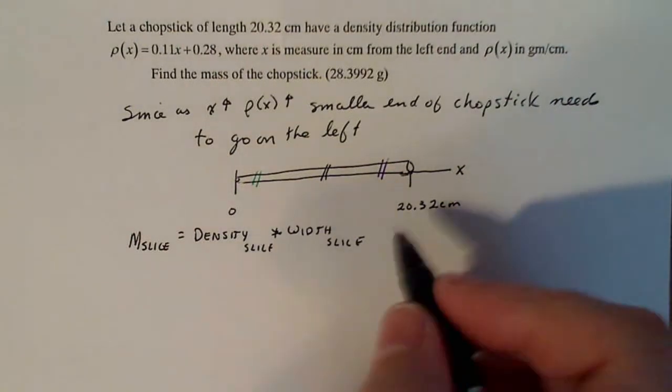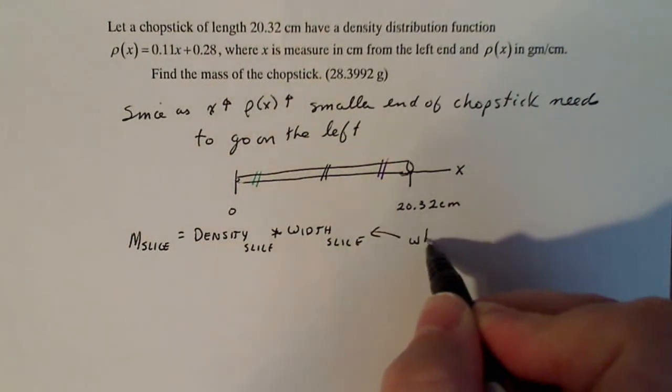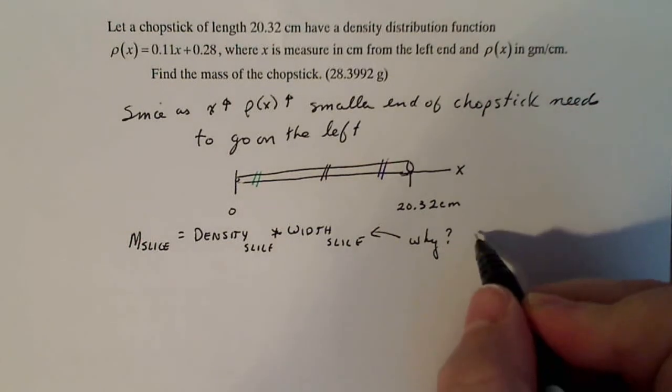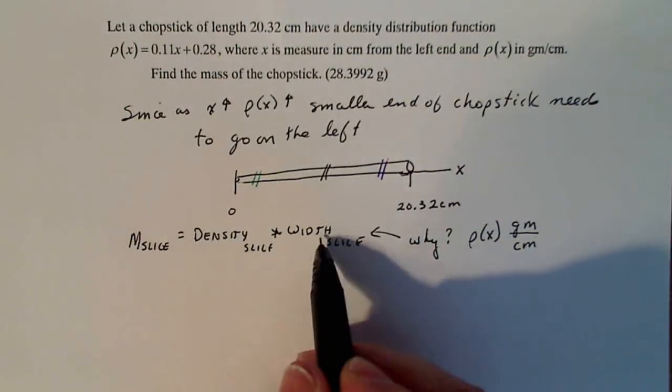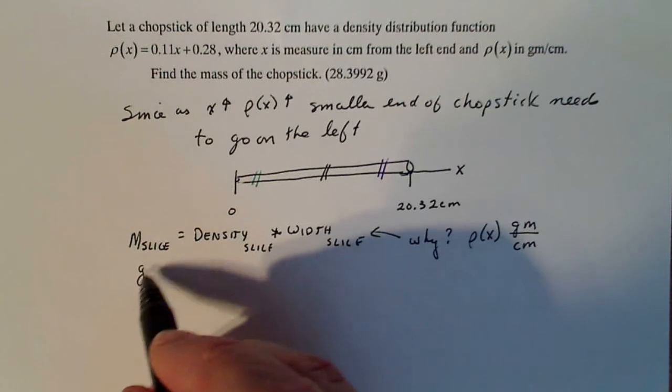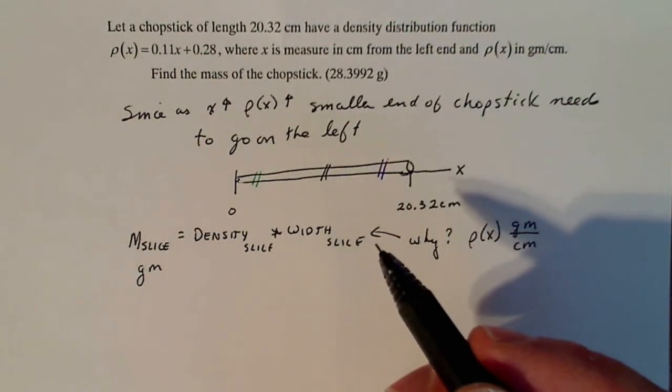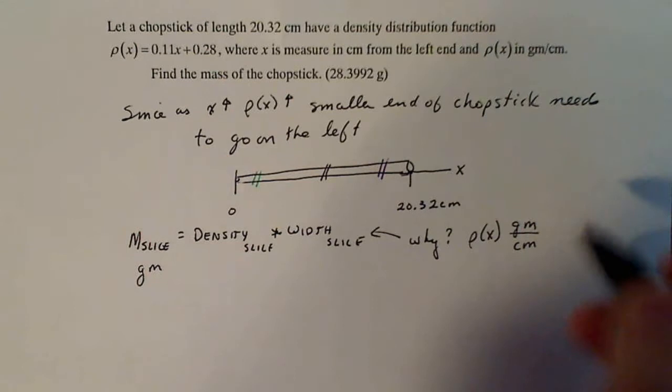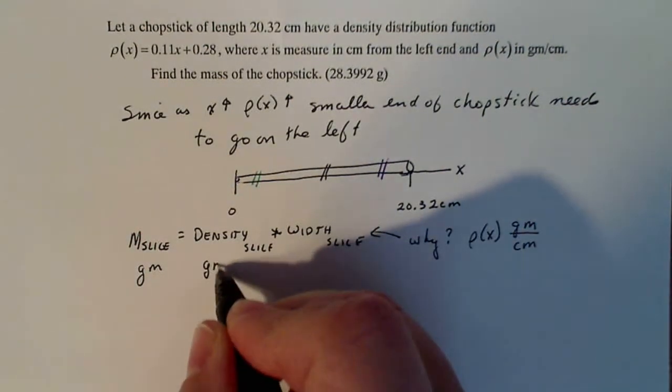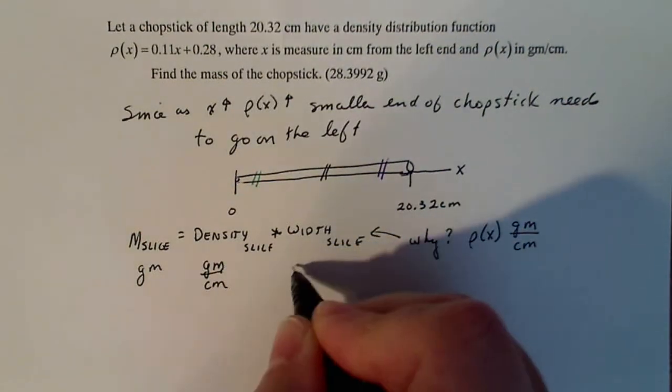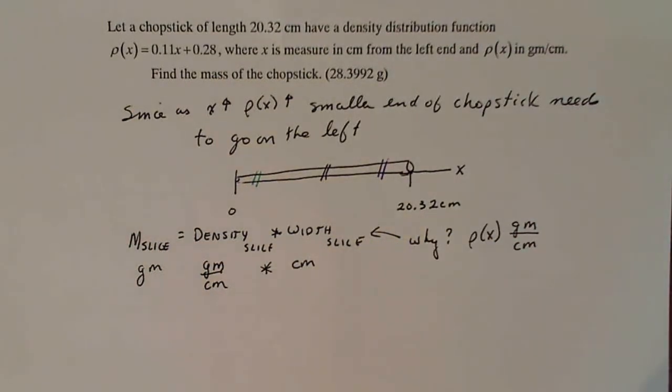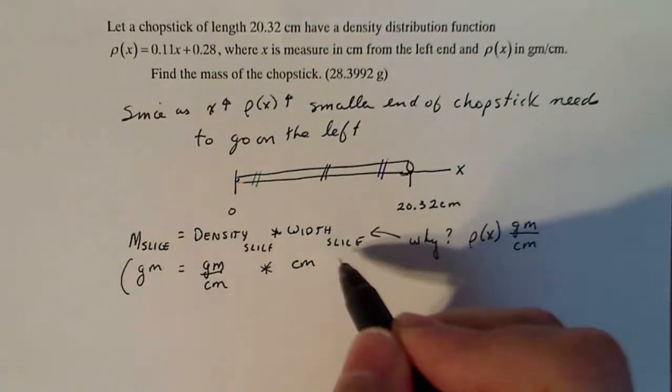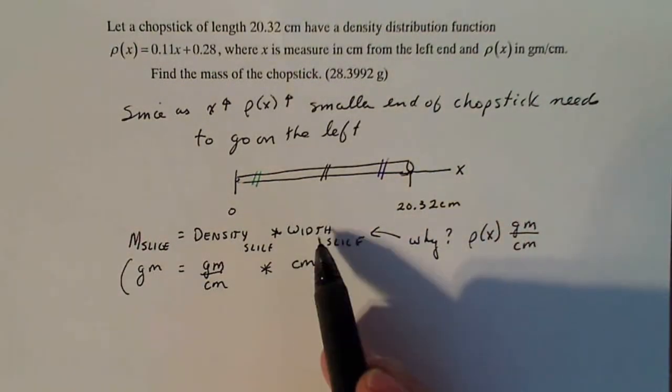Why am I just using width? Well, the reason is because density is calculated in grams per centimeter. And if I want to multiply density times something so I end up with grams, which is what the mass is supposed to be - that's a unit of mass - then I have to multiply it times centimeters. Grams per centimeter times centimeter gives me grams. Units of measure here, very important in getting the problem to work.